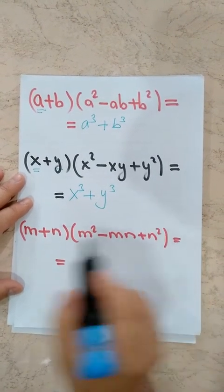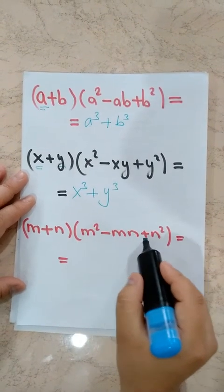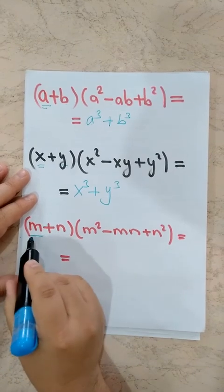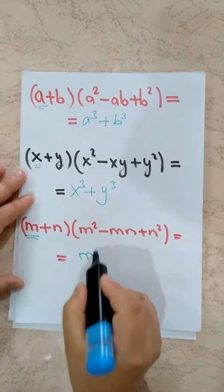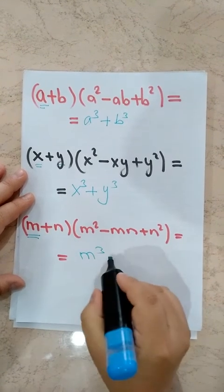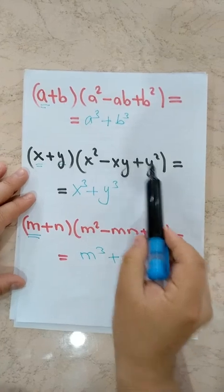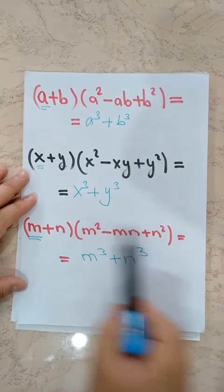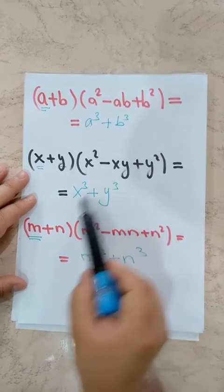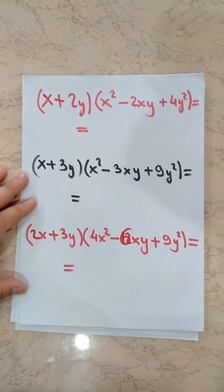Next example: M plus N times M squared minus MN plus N squared. Our first term is M, so M cubed, and second term is N, so plus N cubed. This is the expanded form of this sum of two cubes.